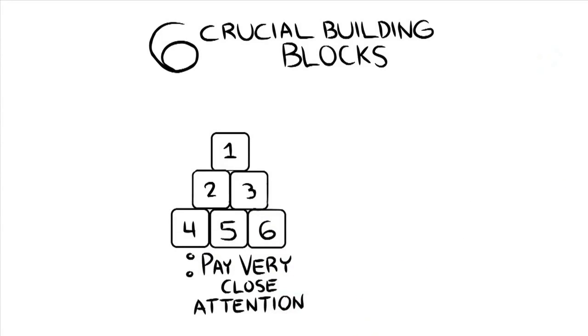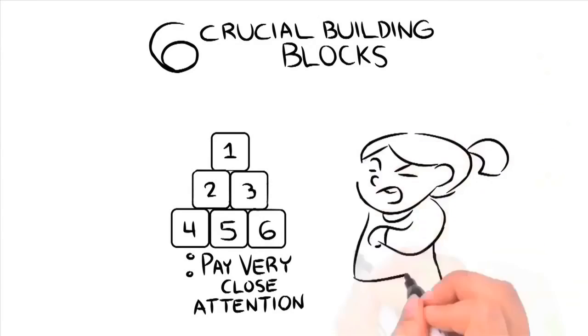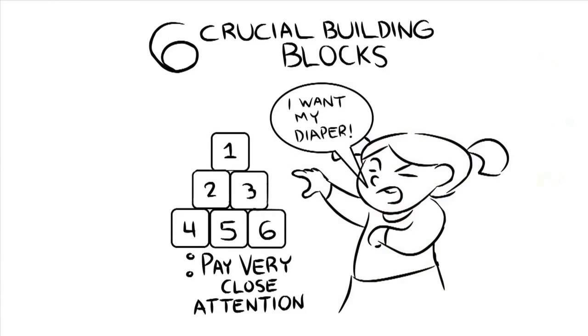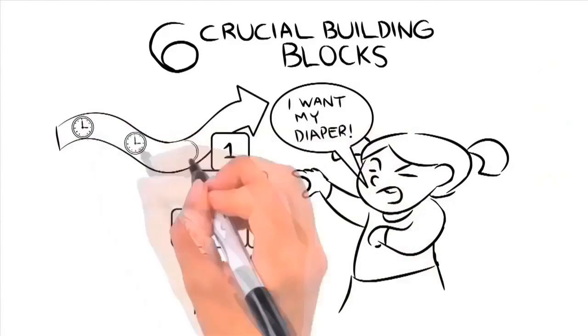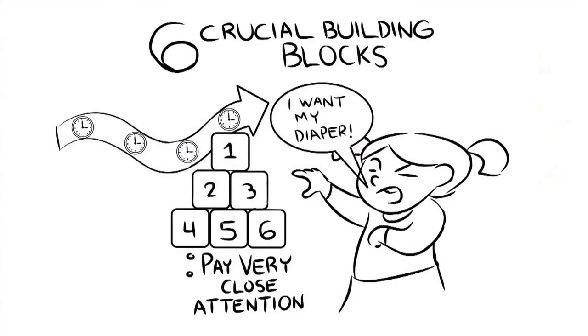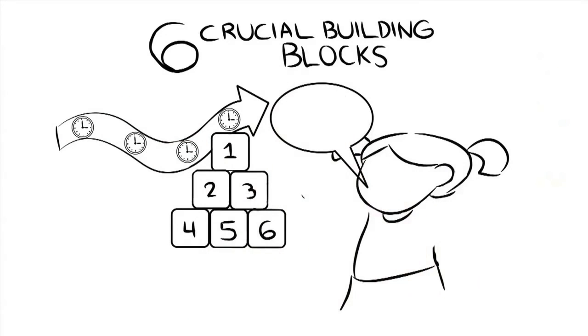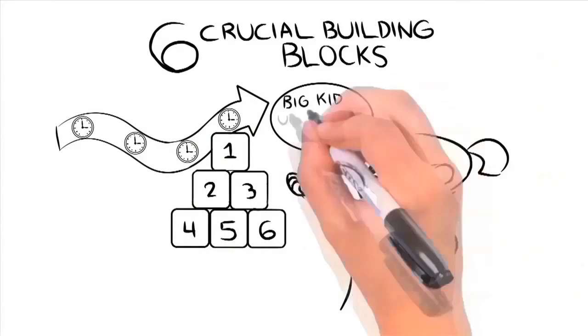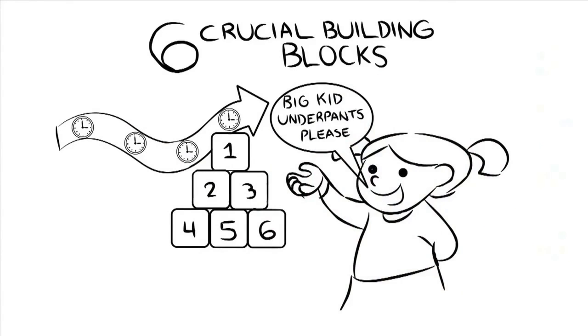With building block number six, you must pay very close attention to this section as it'll save you from tears, frustration, and loads of aggression. Nothing is worse than making tremendous progress when potty training your child only to have them fully regress and yell and scream for their diaper back. I'm going to reveal seemingly simple methods nearly no parent knows about that stops any chance of your child possibly regressing. This works like a miracle for even the world's most stubborn child.